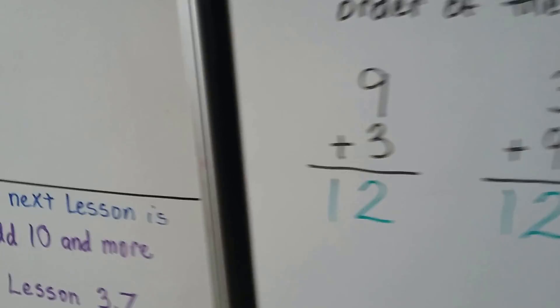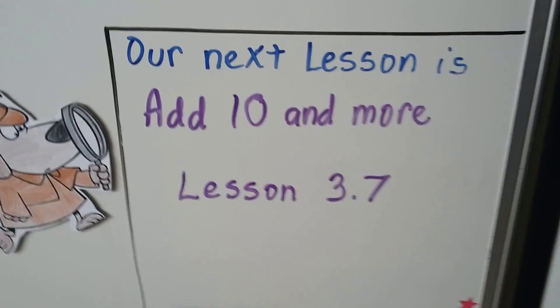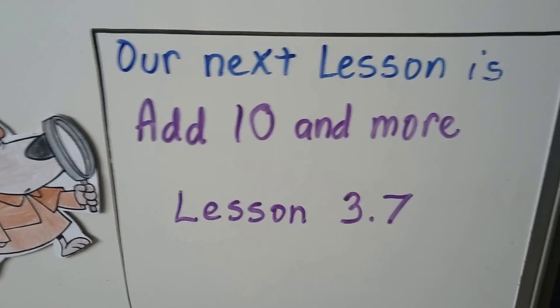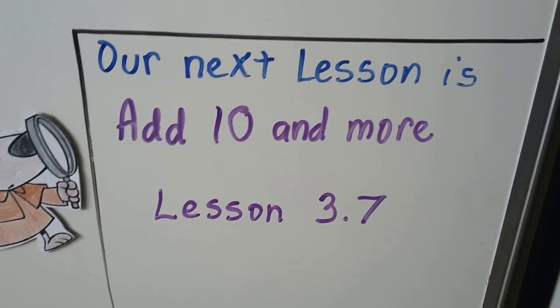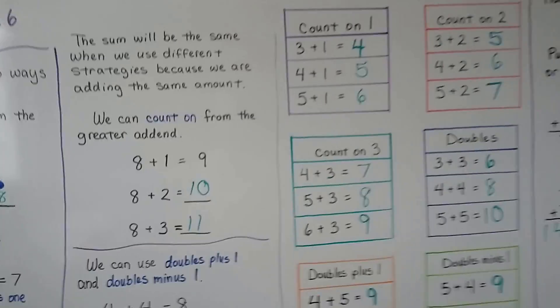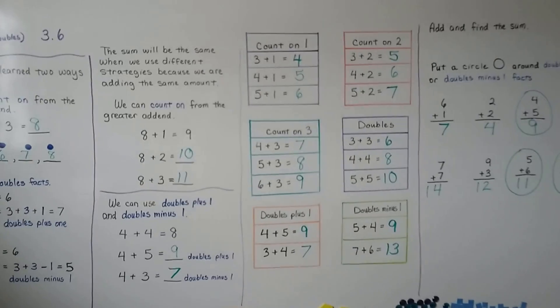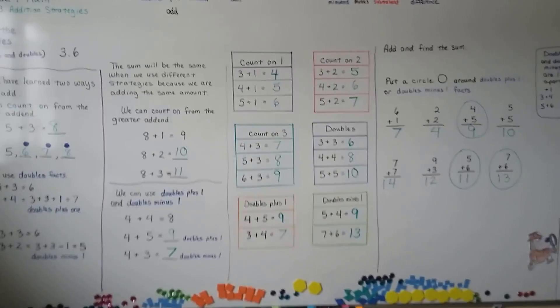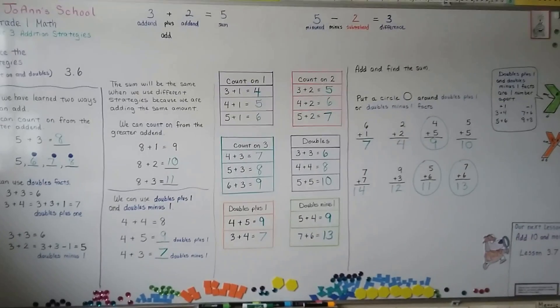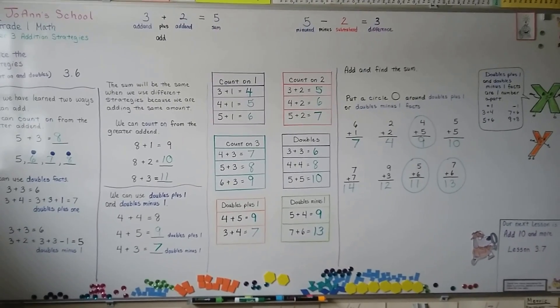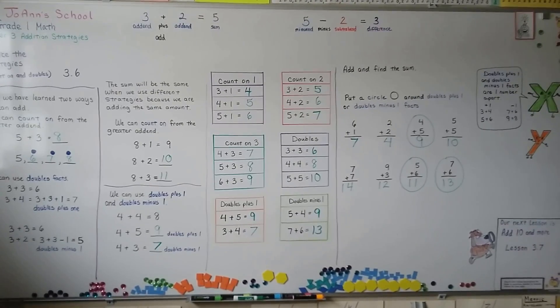Our next lesson is add ten and more — that's going to be lesson 3.7. We're going to use some ten frames. You can find ten frames on the internet and print them out to use with counters. I'll see you next video. I hope you're doing well. Bye.